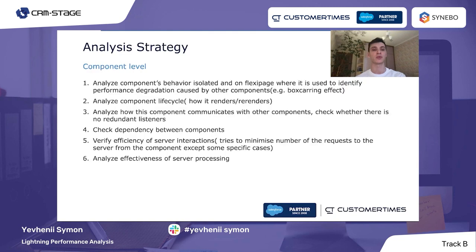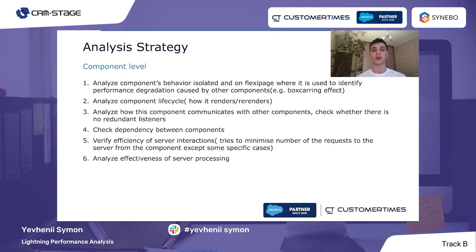For analysis strategy at the component level, analyze the component's behavior in isolation and on the Flexi page where it is used, to identify whether performance degradation is caused by other components' box carrying effects or by the component itself. Analyze the component lifecycle — how it renders and re-renders. Analyze how the component communicates with other components, check for redundant listeners, check component dependencies, verify the efficiency of server interactions, and try to minimize the number of requests to the server except in specific cases where more than one is needed.